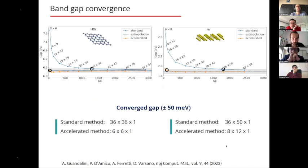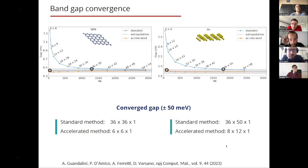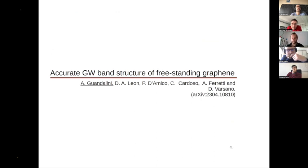The same result holds for hBN and phosphorene: the 6×6 grid provides a converged quasi-particle gap, while 36×36 is needed for hBN with the standard approach. For phosphorene, 8×12 is sufficient against 36×50. It is important to note that a plane-wave GW implementation scales as the square of the number of k-points, so the computational reduction is at least two to three orders of magnitude.